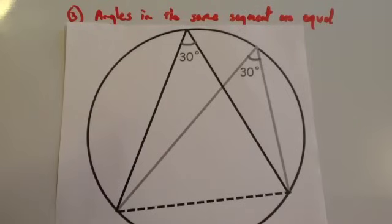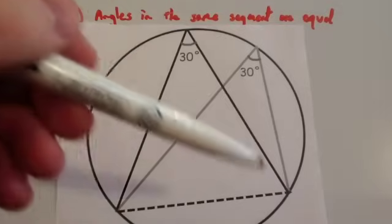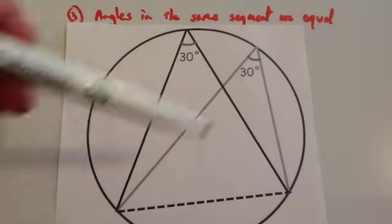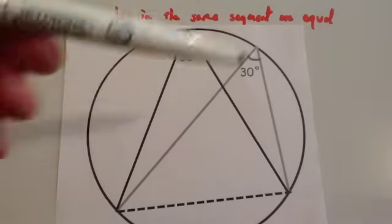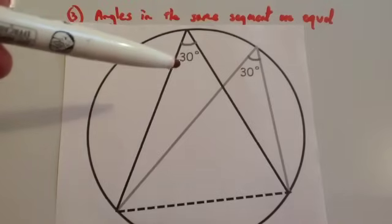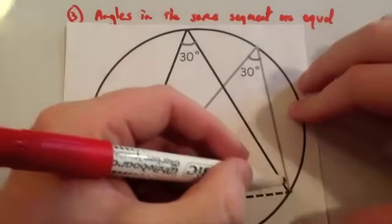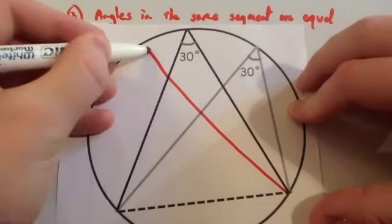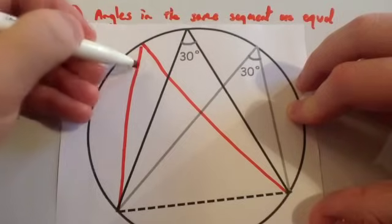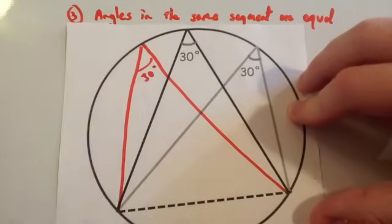The third circle theorem is angles in the same segment are equal. So whenever you've got two points on the circumference and chords reaching up to different points in the circumference in the same segment, the angles will be the same. So if that was 30 degrees, that would be 30 degrees. If I drew another one like so, then that would be 30 degrees.